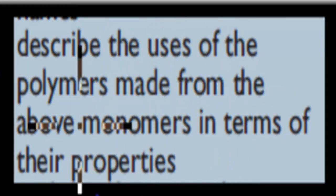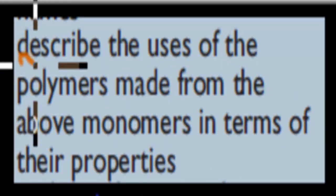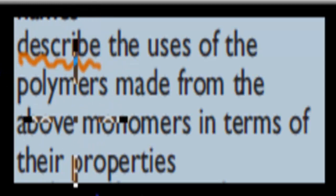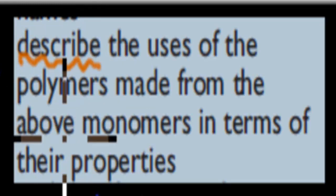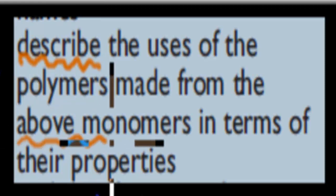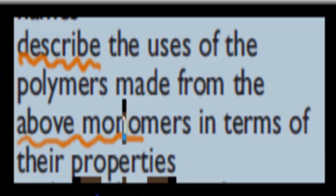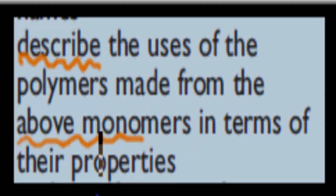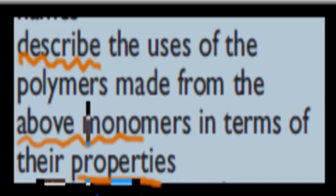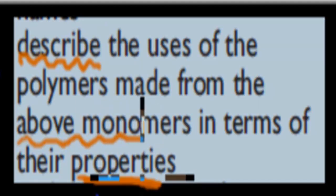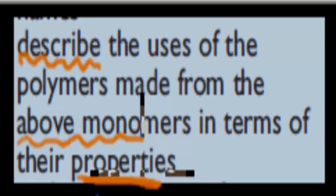A couple of things to note. The verb is 'describe,' so we have to have some detail in terms of description of how these polymers are made. It says 'above monomers,' meaning ethylene, styrene as a monomer, and vinyl chloride. Those were the monomers. We have to talk about what kind of polymers they make and what uses these have due to their properties — how the properties allow them to be used as certain things in everyday life.